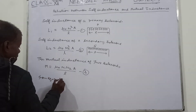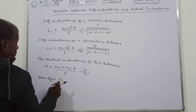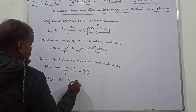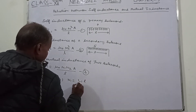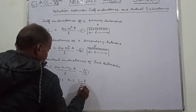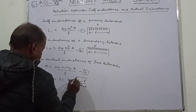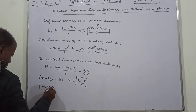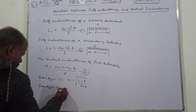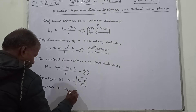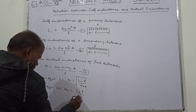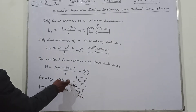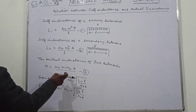From equation number 2, n1 is equal to the square root of L1 l upon mu naught a. From equation number 2, n2 is equal to the square root of L2 l upon mu naught a. Now put the values of n1 and n2 into equation number 3.